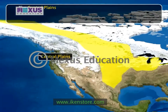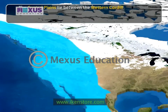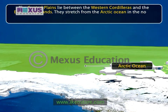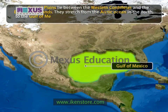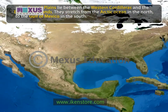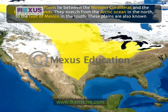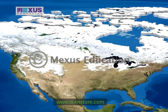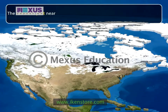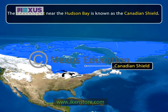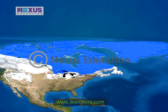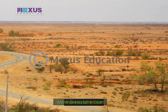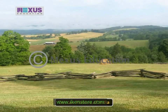The Central Plains lie between the Western Cordilleras and the Eastern Highlands. They stretch from the Arctic Ocean in the north to the Gulf of Mexico in the south. These plains are also known as the Great Plains. The northern part near the Hudson Bay is known as the Canadian Shield. It is made up of some of the oldest rocks in the world, like the Plateau of Africa and the Deccan Plateau of India.